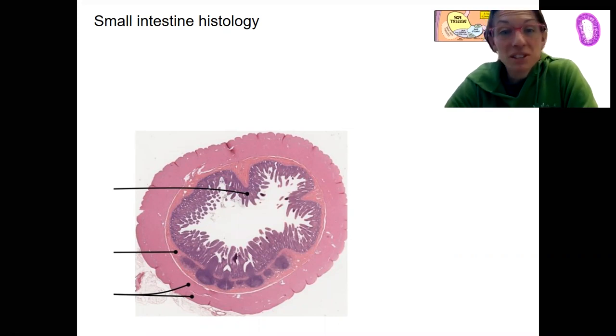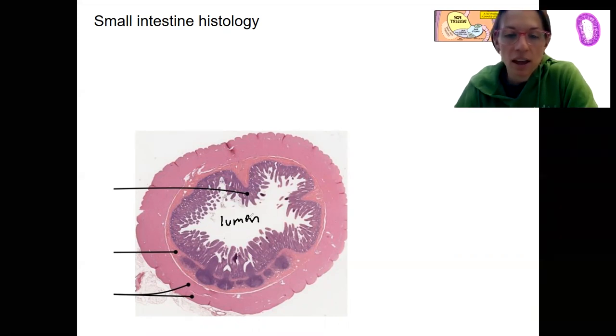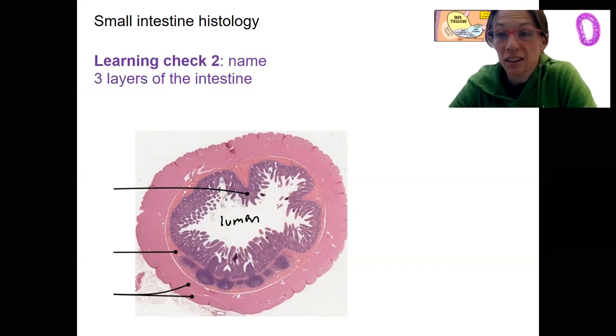First, what I want you to do, so this is about a 100x cross-section of an intestine. Can you see how here's our lumen? And I want you to label the three, name the three layers. Can you recognize them?